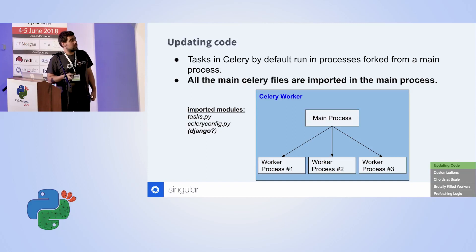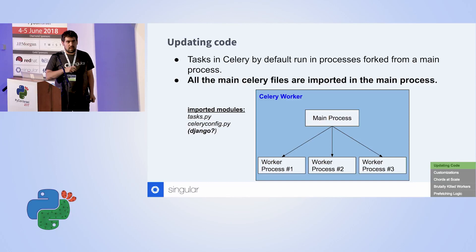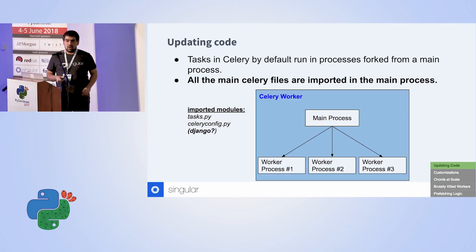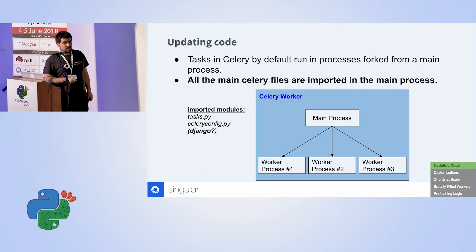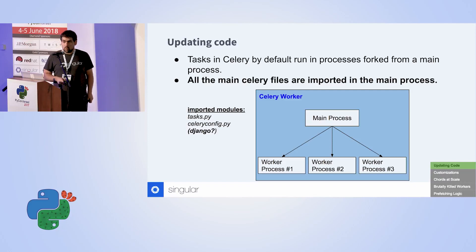To understand the problem of updating code, we need to understand how workers operate. In the default setting, Celery has a main process and sub-processes that are forked from it — it's an abstraction that wraps multiprocessing. The key question is where your code is actually imported. Obviously if something is imported in the main process, it will be present in each forked process until the worker is restarted. We quickly understood that our task definitions are imported in the main process, as is the configuration and, if you use a Django backend, all Django models code.